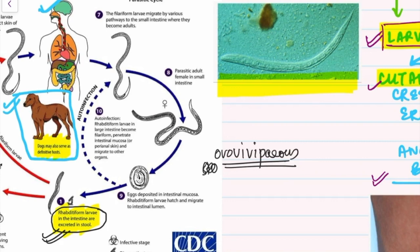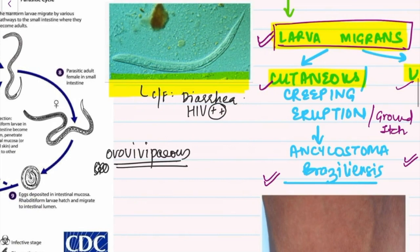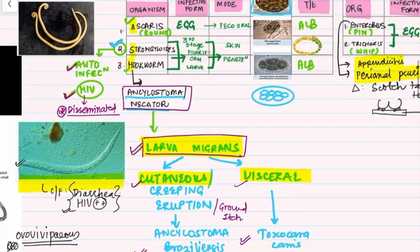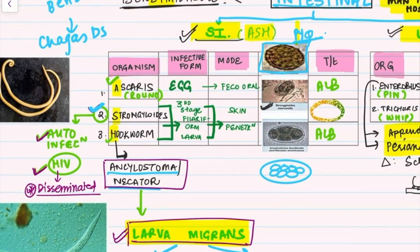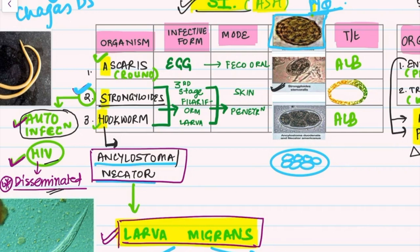Whenever you have an image of larvae in the clinical stem with features of diarrhea, especially in an HIV-positive individual, think of disseminated strongyloidosis — Strongyloides is one of the organisms to remember on diarrhea plus HIV. There is also a risk of autoinfection in Strongyloides. An image of the egg — which shows the larva inside the egg — is sometimes asked as well.